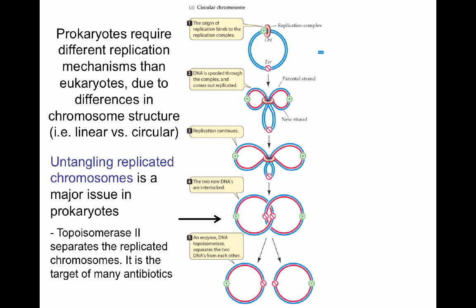As the replication machinery binds to the origin of replication and initiates a replication fork, the DNA is spooled through this replication complex — the parental strand shown in blue and the newly synthesized strand in red. Eventually the replication machinery continues until it finds an area termed TER, which stands for termination, where the replication machinery disengages. This leaves the chromosomes interlocked, and through the effect of the enzyme topoisomerase 2, the two chromosomes are separated as independent units.